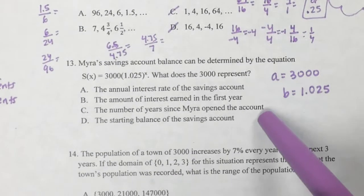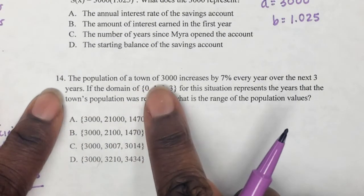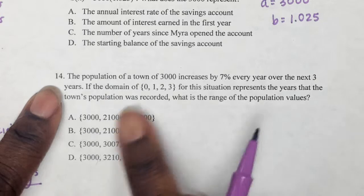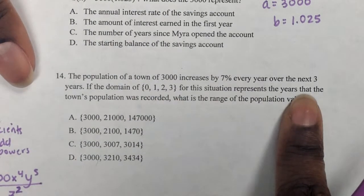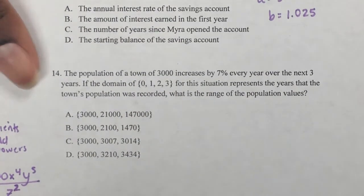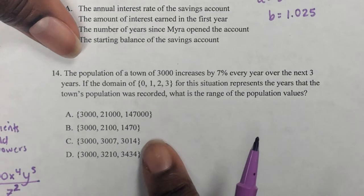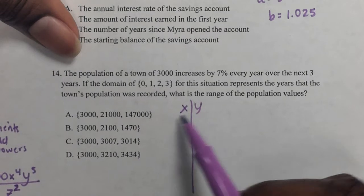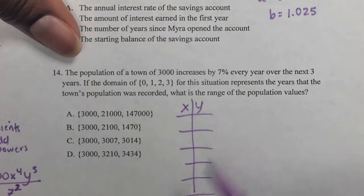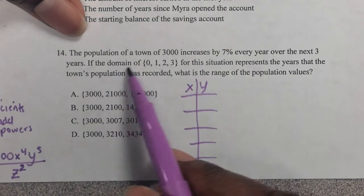We already did 13. We already did 14. So number 14, the population of a town of 3,000 increases by 7% every year over the next 3 years. If the domain of 0, 1, 2, 3 for this situation represents the years that the town's population was recorded, what is the range of the population values? This is a domain and range word problem. And we know that it has to start with what? The initial value is 3,000. And this is even help on your star. When you see a word problem and it asks you for either domain or range, that's when you need to make a table so it can help you. Because what does it give you? The domain or the range?